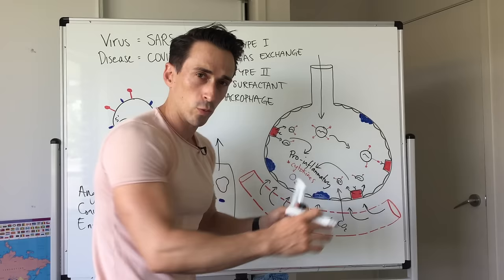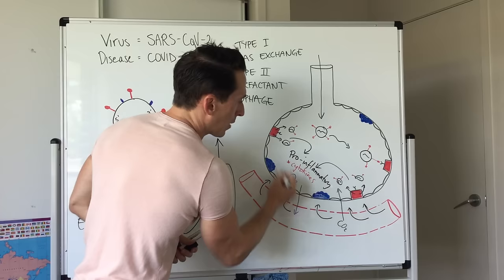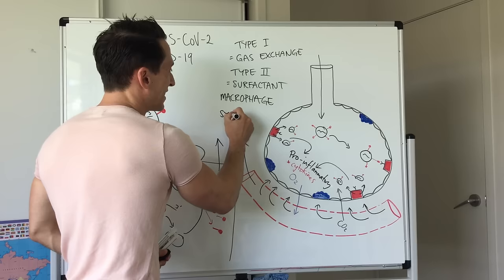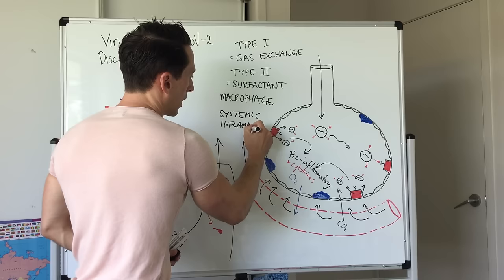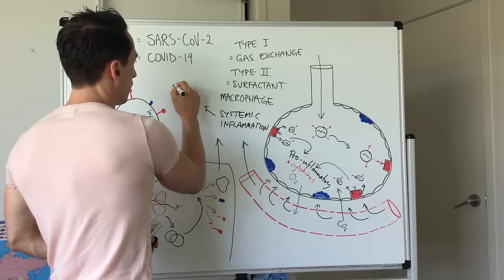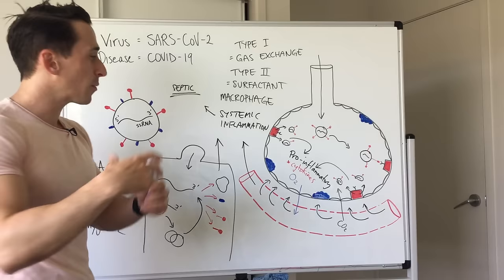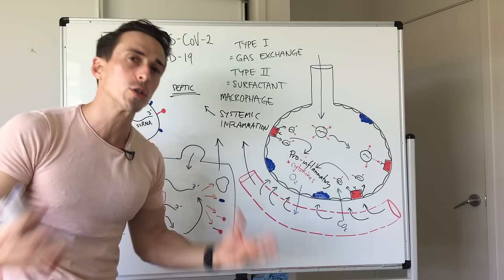Now this is localized inflammation but if this gets bad enough, these inflammatory chemicals can jump into the bloodstream and go to the whole body and this results in systemic inflammation. This systemic inflammation could result in septic syndrome which means you now have inflammation around the entire body. So tissues won't be fed properly, organs will go into failure. This is a bad thing obviously.